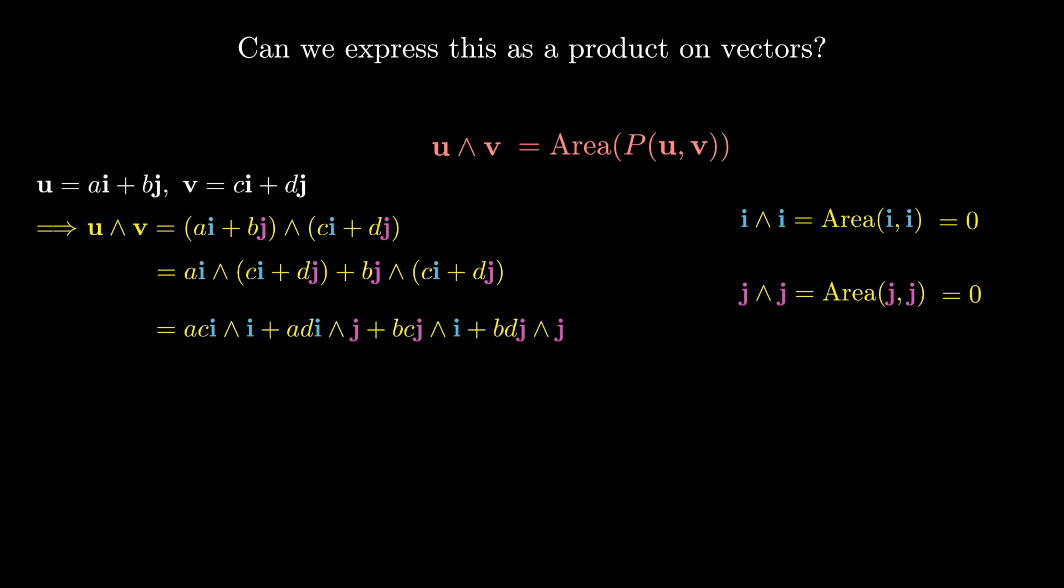So now what we can do from what we've just calculated is that in this u∧v calculation, the first term and the last term, which are the i∧i and j∧j terms, are both zero. What we're now left with therefore is that u∧v is ad(i∧j) + bc(j∧i).